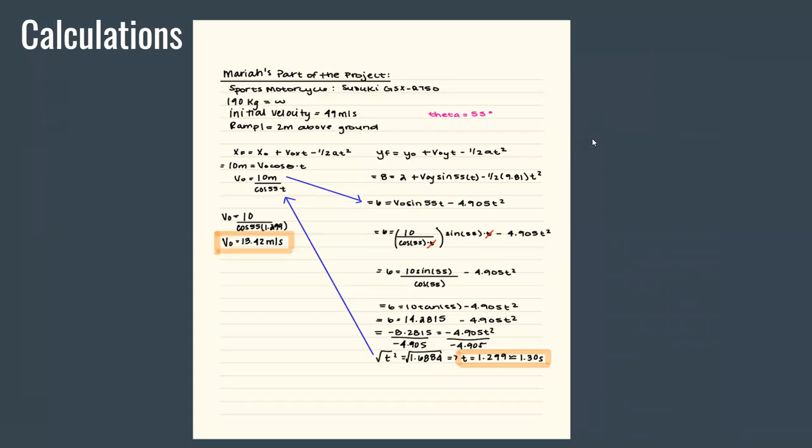And these are the results for the Suzuki GSX R750 sports motorcycle that started 2 meters above the ground. Calculated the time at 1.30 seconds and the initial velocity at 13.42 meters per second.